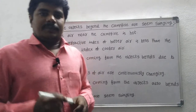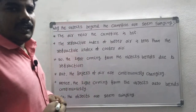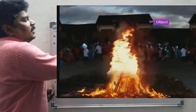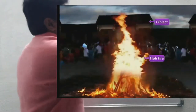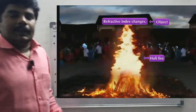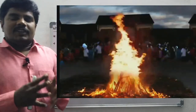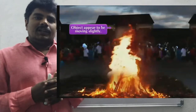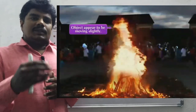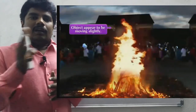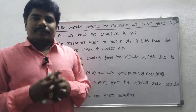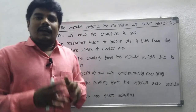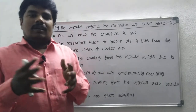Good morning students. Today our topic is why the objects beyond the campfire are seen swaying. Generally, when we stand beside the campfire, the objects beyond that campfire are shivering. The reason is the air near the campfire is hot.